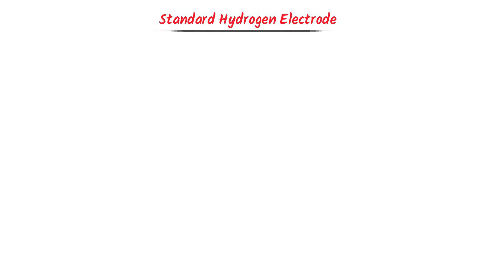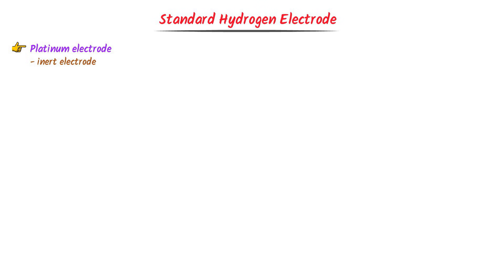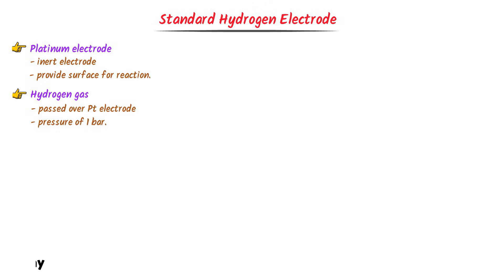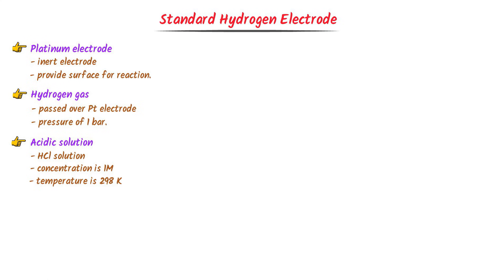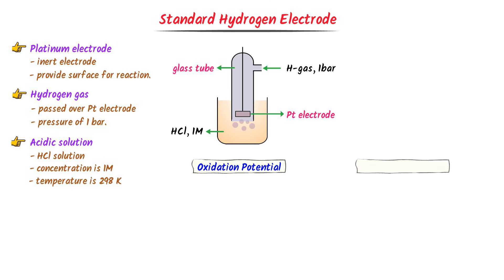In the Standard Hydrogen Electrode we use three important things: a platinum electrode, which is an inert electrode that does not participate in oxidation or reduction but only provides a surface for the redox reaction; hydrogen gas, passed over the platinum electrode at a pressure of 1 bar; and an acidic solution like HCl at a concentration of 1 M at 298 K (25°C). To construct the cell, the platinum electrode is placed in a glass tube, we take 1 M HCl solution at 298 K, and hydrogen gas at 1 bar is introduced through the inlet.